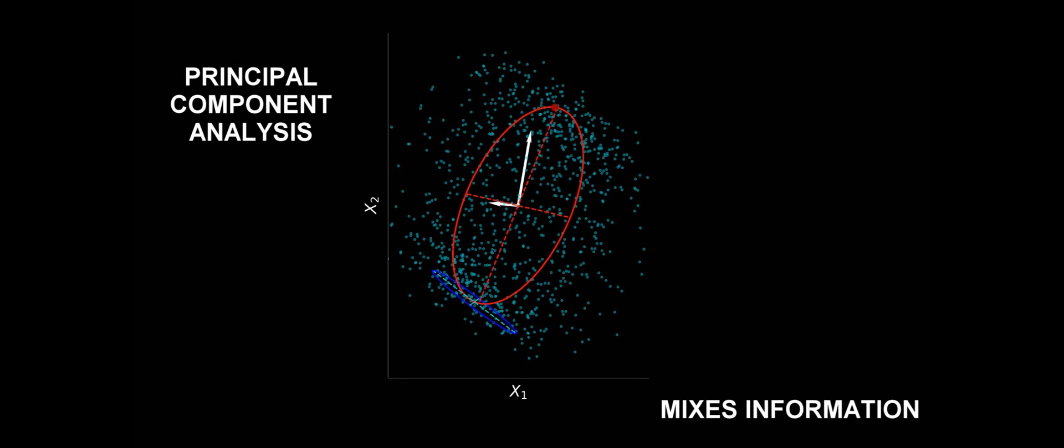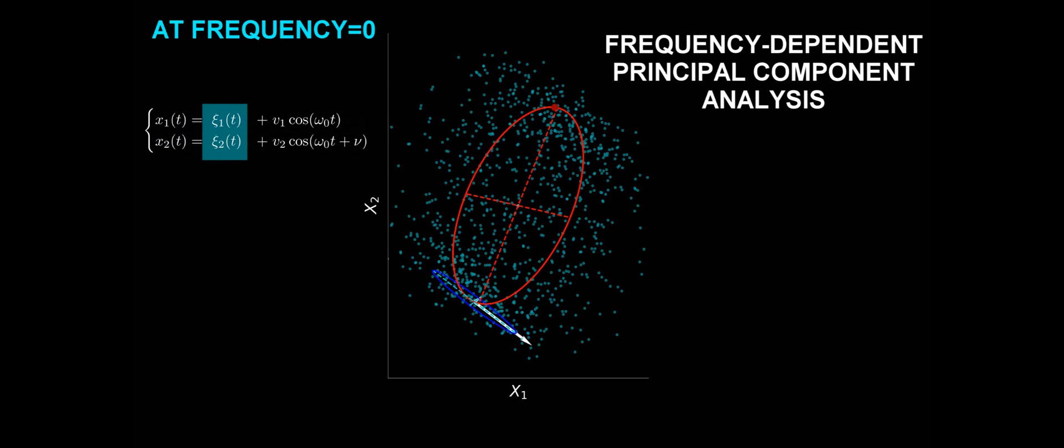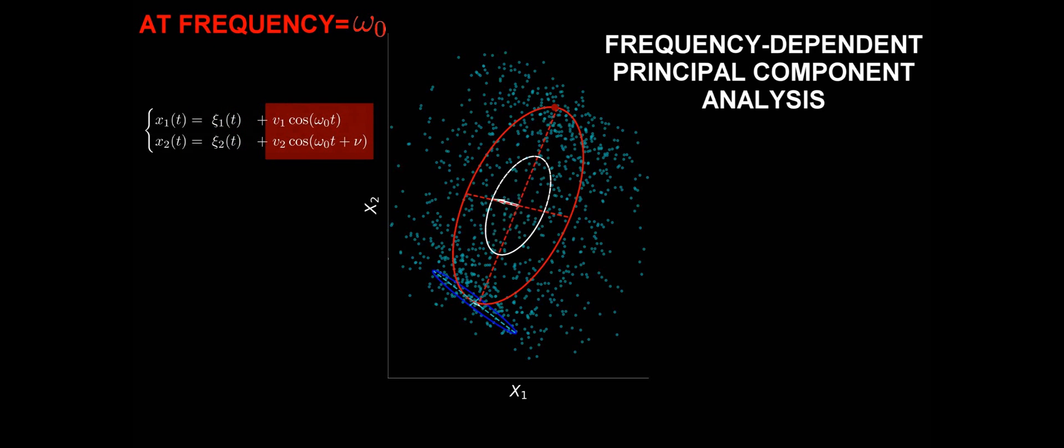If we were to blindly perform principal component analysis, we would observe that the principal components shown in white in the screen do not align with either the deterministic signal or the stochastic process. It mixes information coming from both of them. When we apply our method, at the longest time scale, zero frequency, the system is dominated by the Gaussian process, as the periodic signal just vanishes. On the other hand, at the characteristic frequency we recover the periodic signal. Thus, our method is able to disentangle these independent sources of variability, just by filtering the appropriate time scales.